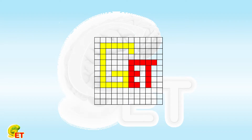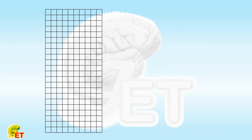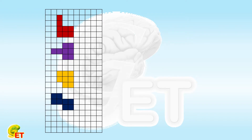For instance, when we fix the number as 8, we may have this one, this one, this one, this one, this one, this, this, and this one.